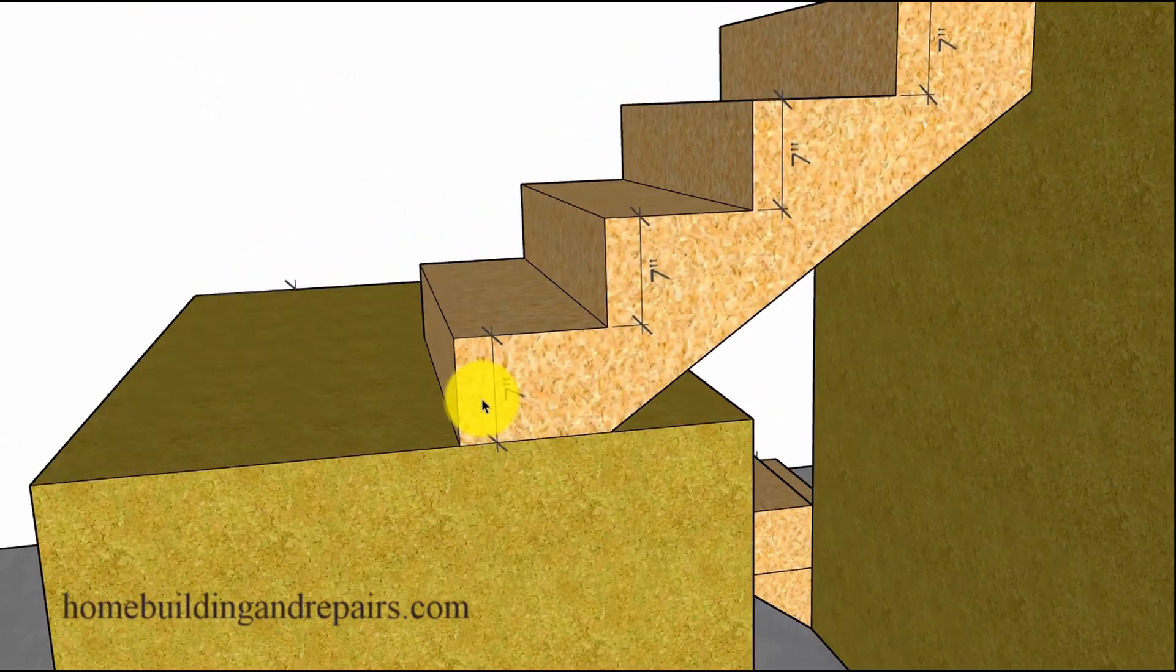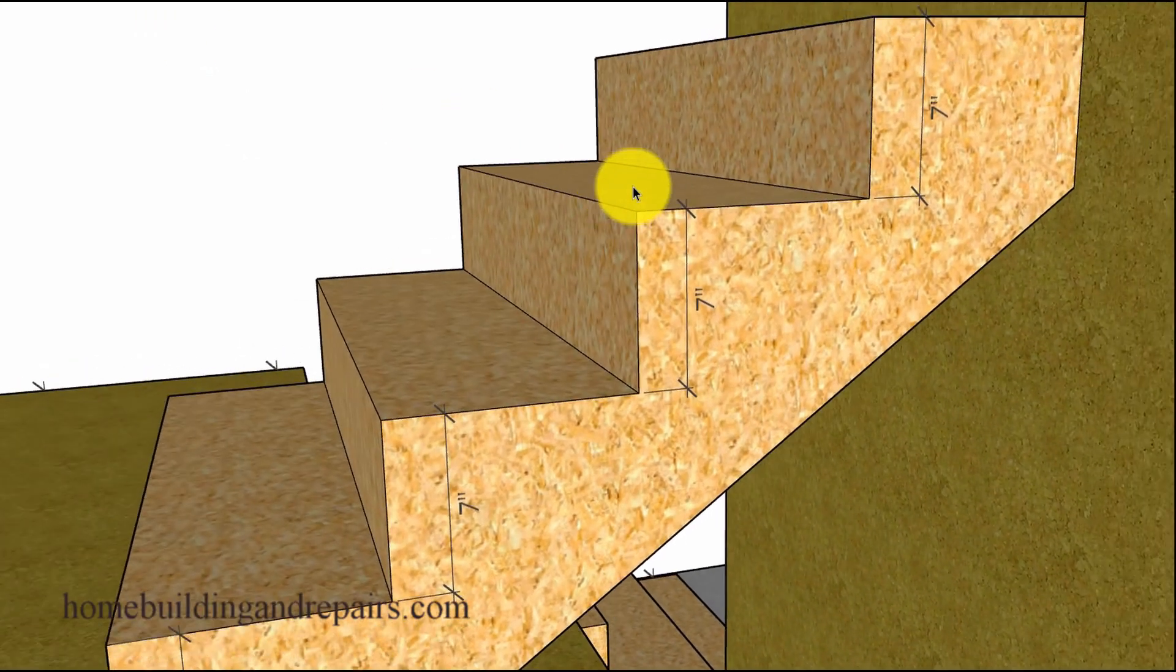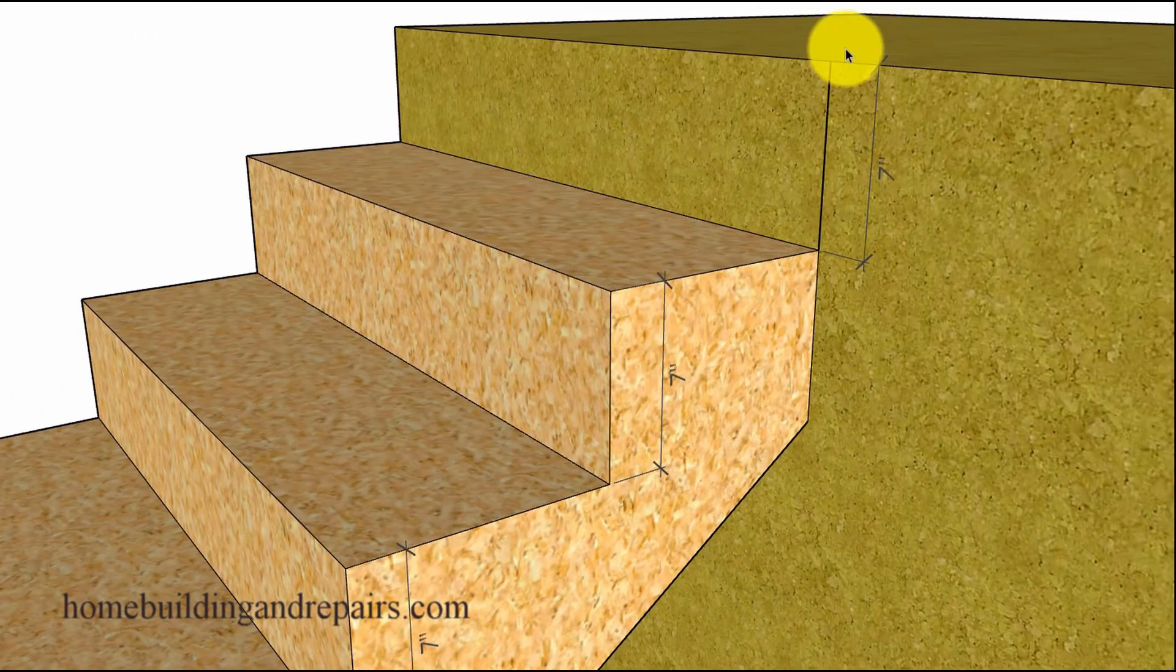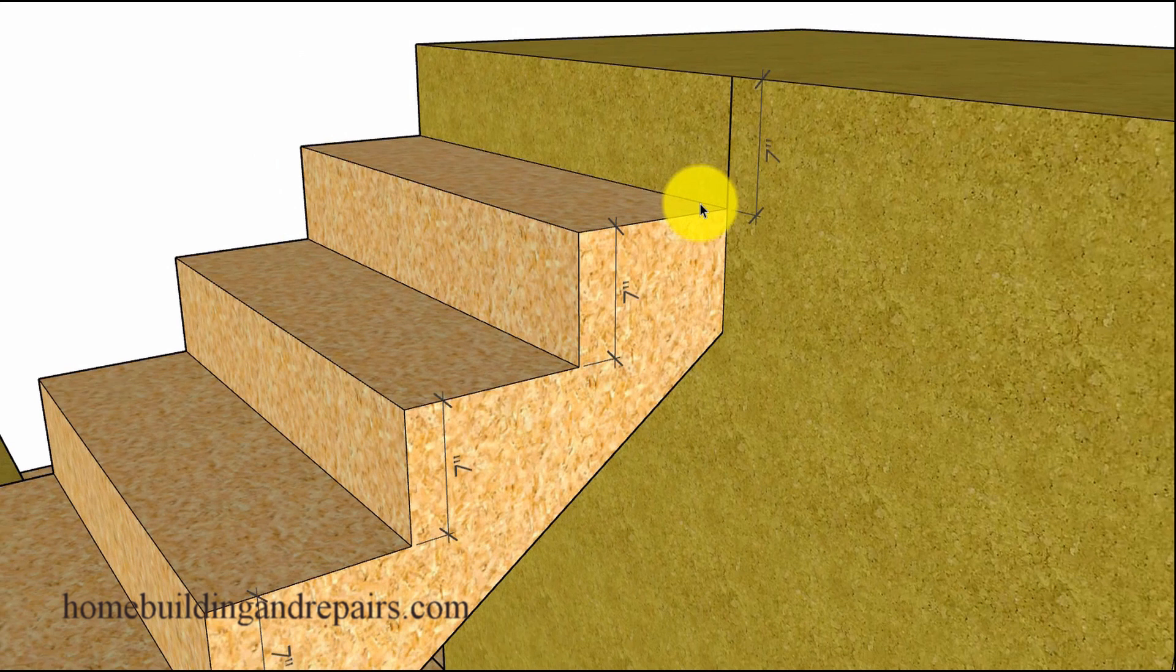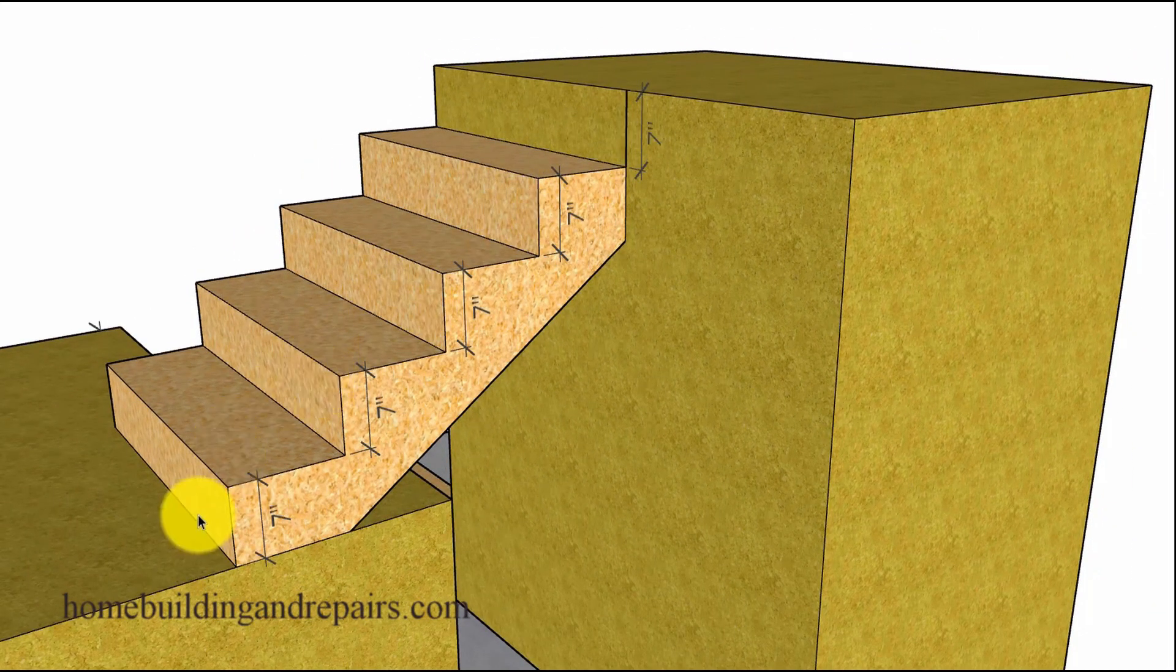Let's go ahead and take a look at the individual riser height of seven inches for this stairway. Each one of the risers seven inches. And of course if we multiply seven by the amount of risers, one, two, three, four, five, we're going to get 35 inches.